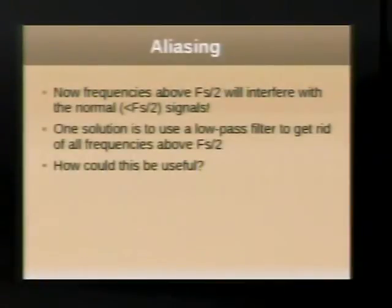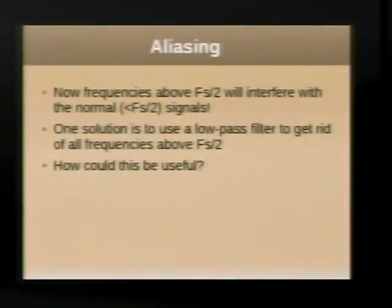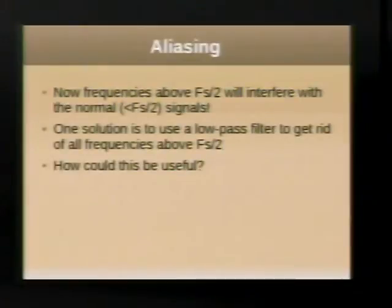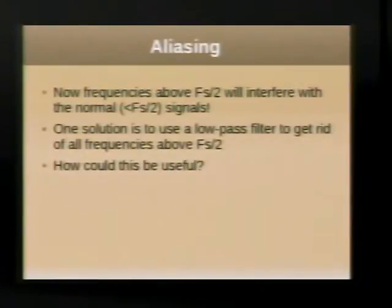This sampling frequency is commonly written as FS, and the Shannon limit is expressed as FS over 2. Frequencies above FS/2, if you haven't filtered them out, will interfere with the in-band signals you're trying to get. So what you do is take a low-pass filter and chop off everything above approximately half your sampling frequency to get rid of the unwanted interference.